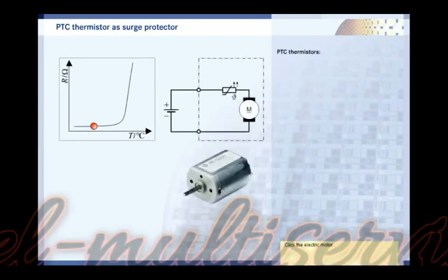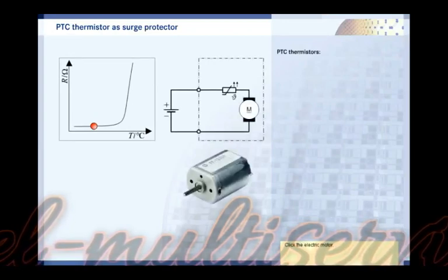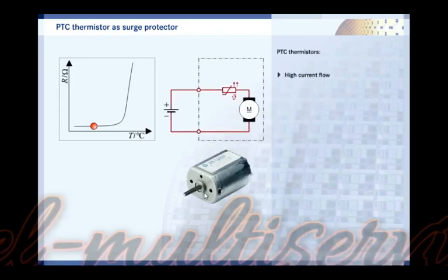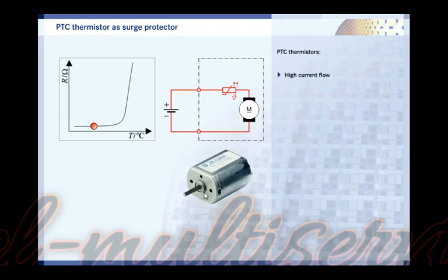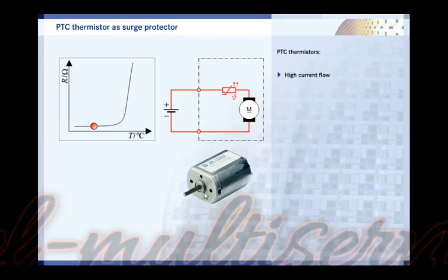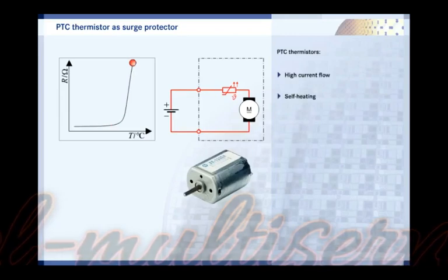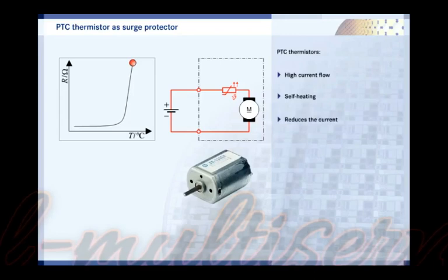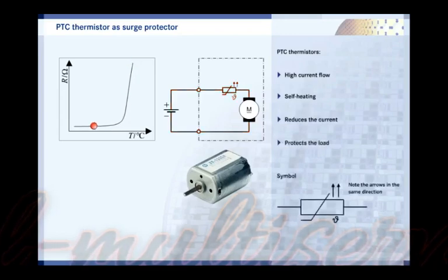Click the motor to jam it. The overload causes the motor to consume a very high current, which also flows through the PTC thermistor. This increases the temperature in the PTC crystal. As a result, the resistance of the PTC increases and it curbs the current, thus protecting the motor from surge damage.